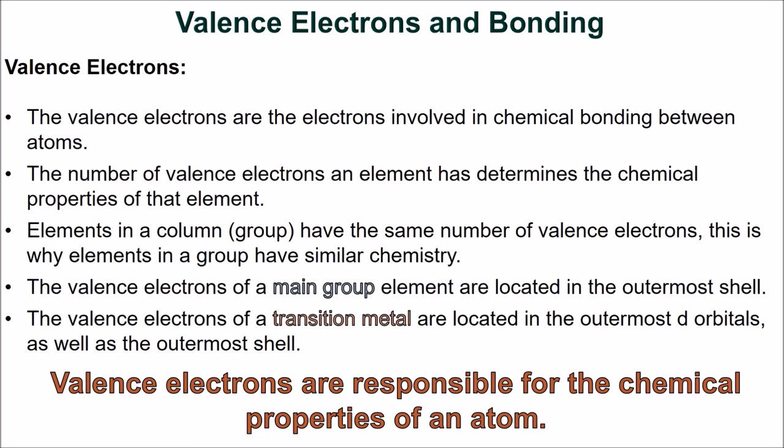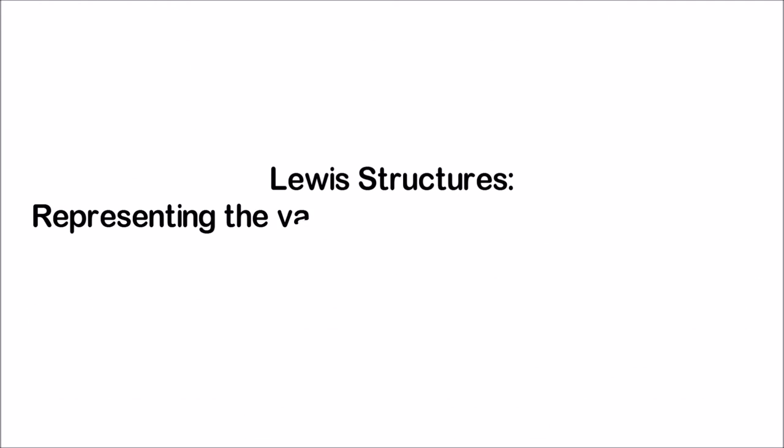Before we continue, we need to expand our definition of valence electrons. We know that valence electrons are the electrons in the outermost shell of an atom, but most importantly, valence electrons are the electrons primarily involved in chemical bonding. The number of valence electrons an element has determines its chemical properties. Elements in a group have the same number of valence electrons, which is why elements in a group have similar chemistry. The valence electrons of a main group element are in the outermost shell, while those of a transition metal are in the outermost d orbitals as well as the outermost shell. We are interested in valence electrons because they are responsible for much of the chemical behavior of atoms.